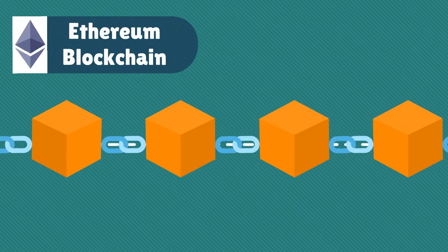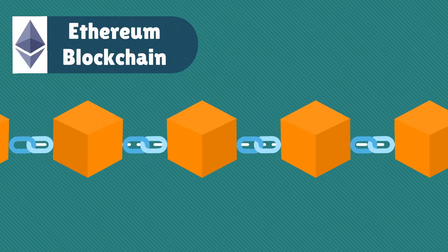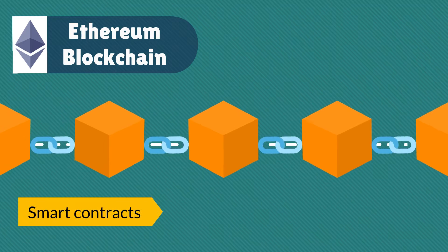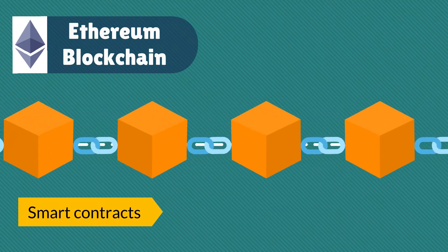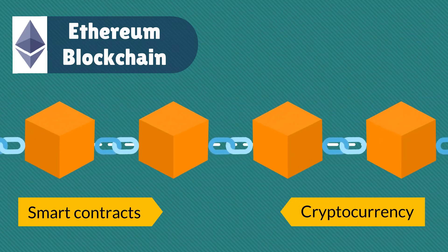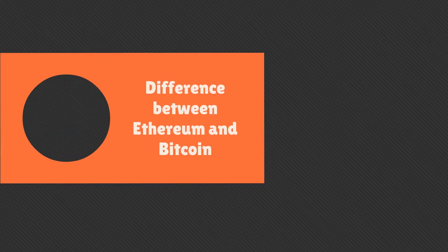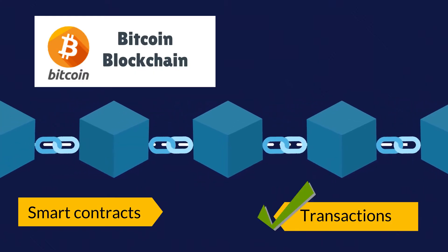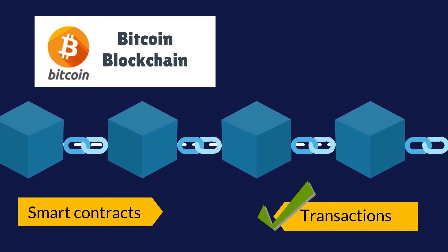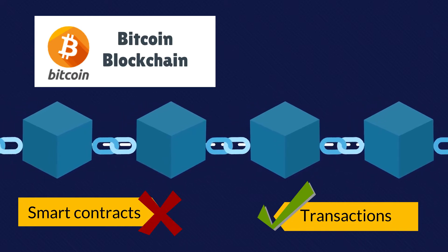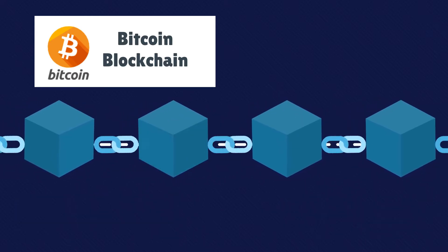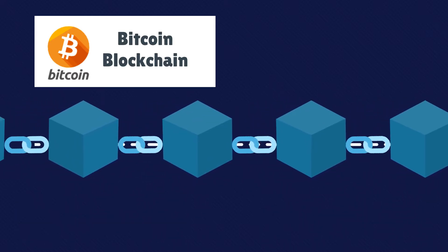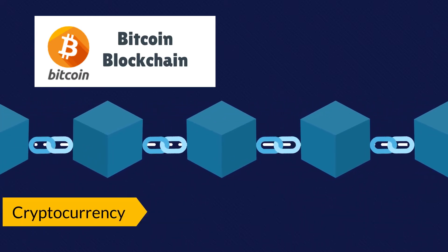Ethereum is a platform for the creation of smart contracts, and at the same time it can be utilized as a cryptocurrency. Bitcoin blockchain can be used for storing transactions but not contracts. Bitcoin is primarily a cryptocurrency.